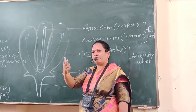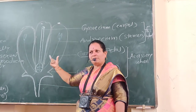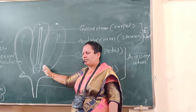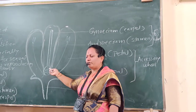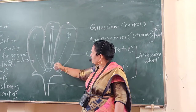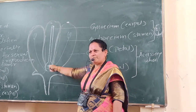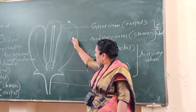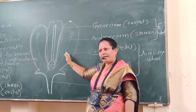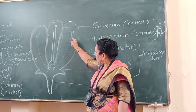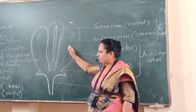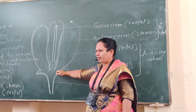In a bisexual flower, a typical flower consists of both male and female reproductive structures. Therefore, in a bisexual flower, both androecium and gynoecium are present. Androecium is the main male reproductive structure, and each stamen consists of an anther and a filament.